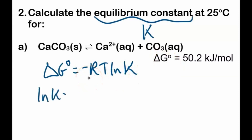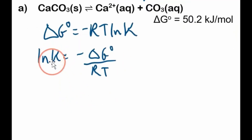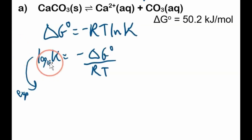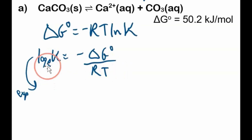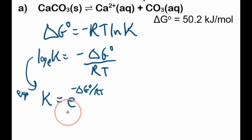Rearranging: ln K = −ΔG°/RT. To convert from logarithmic to exponential form — ln is just a log with base E, the natural log. To convert, we take the base E to the power of what it equals: K = e^(−ΔG°/RT). This is how we convert to exponential form.